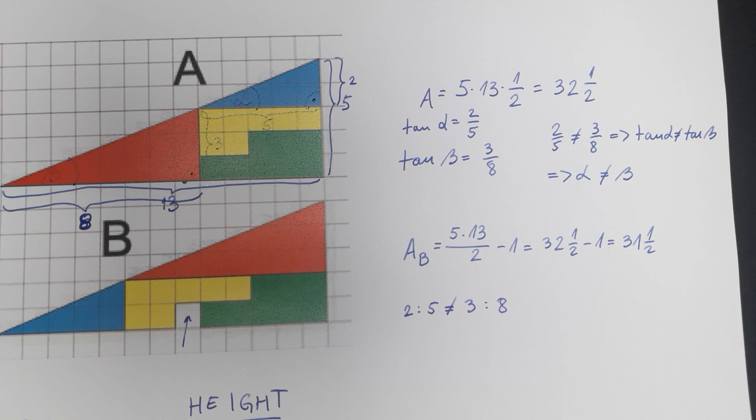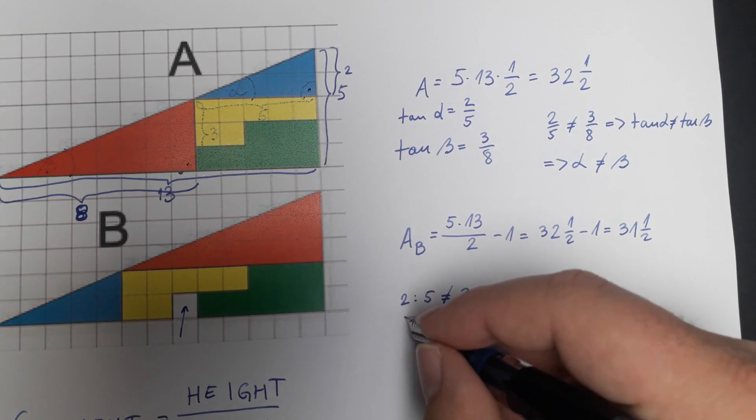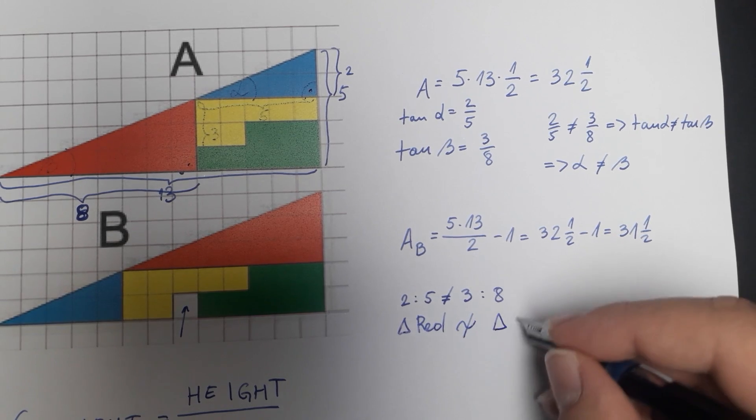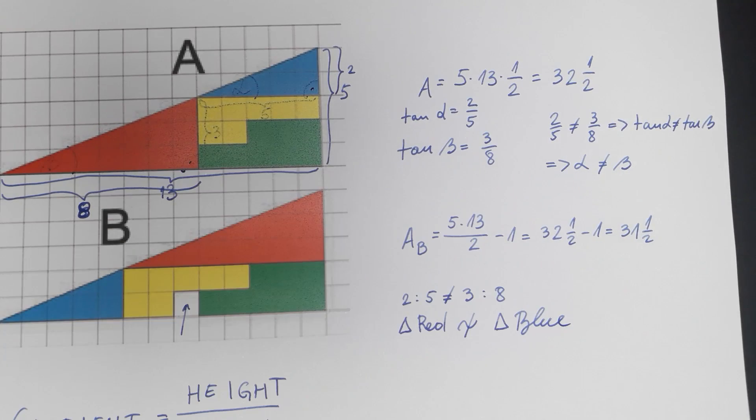So these two triangles are not similar. The red triangle is not similar to the blue triangle. They only look similar but they are not actually similar.